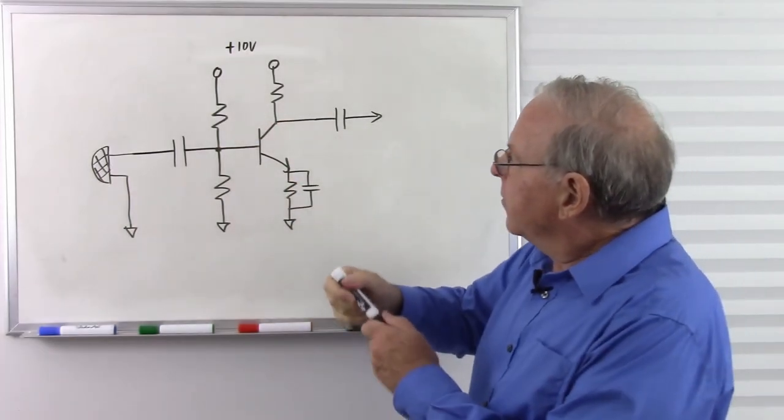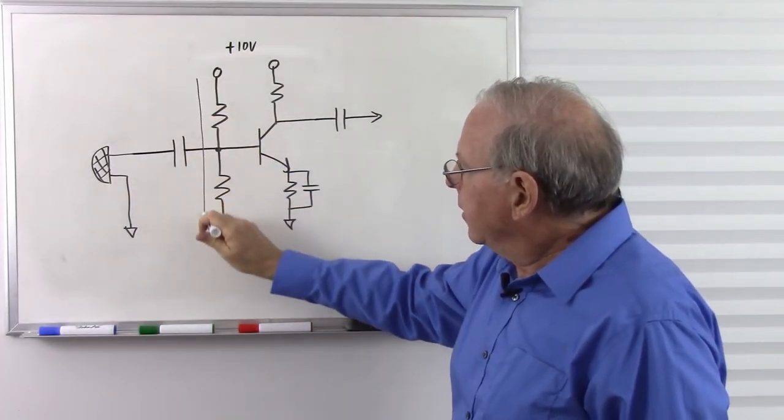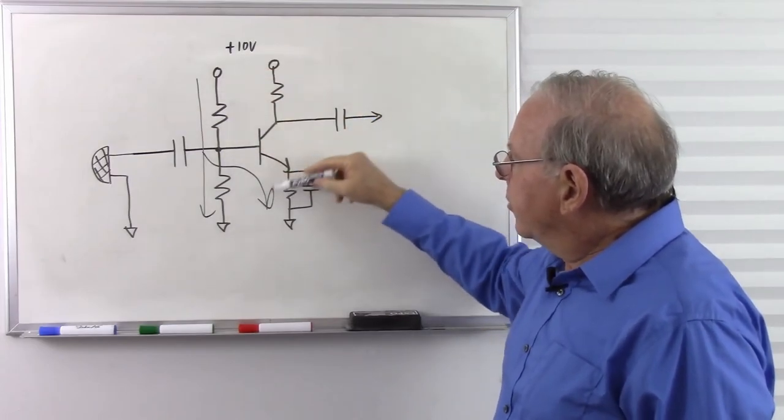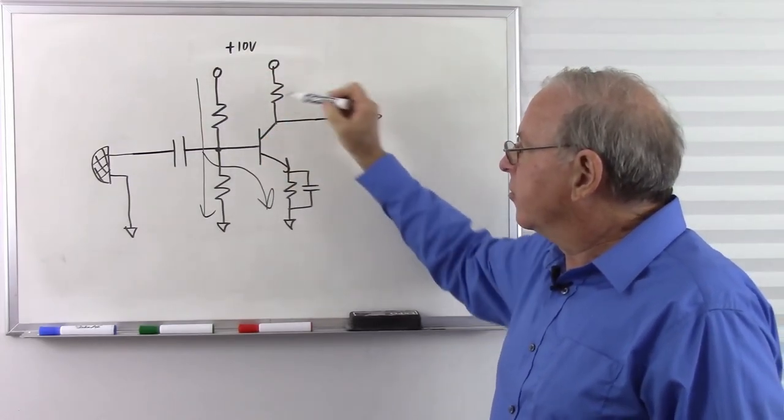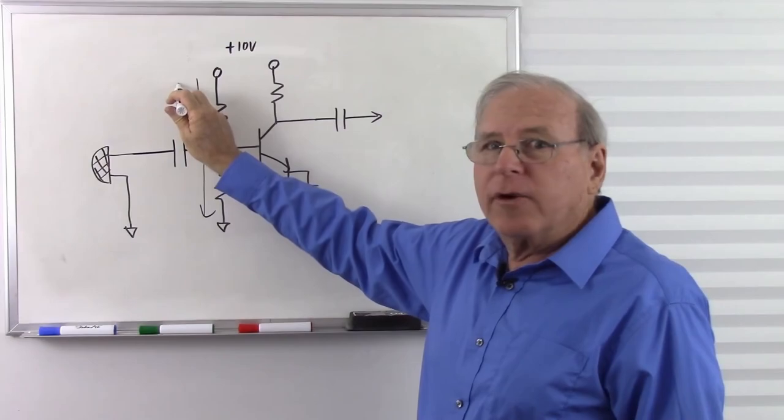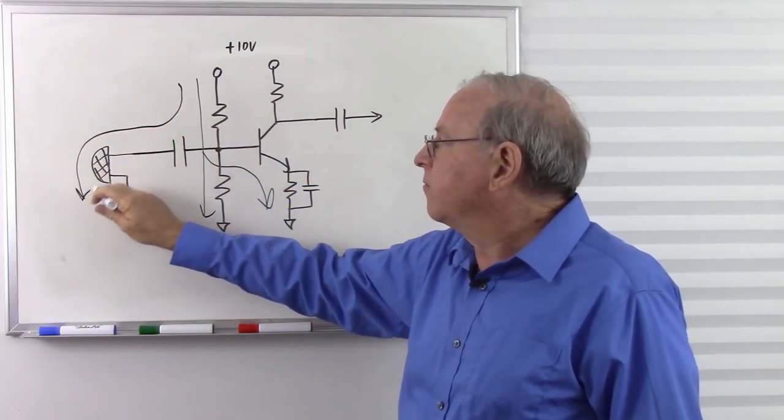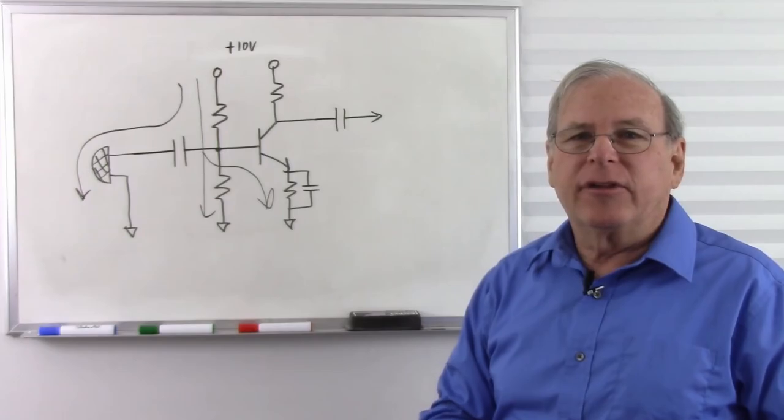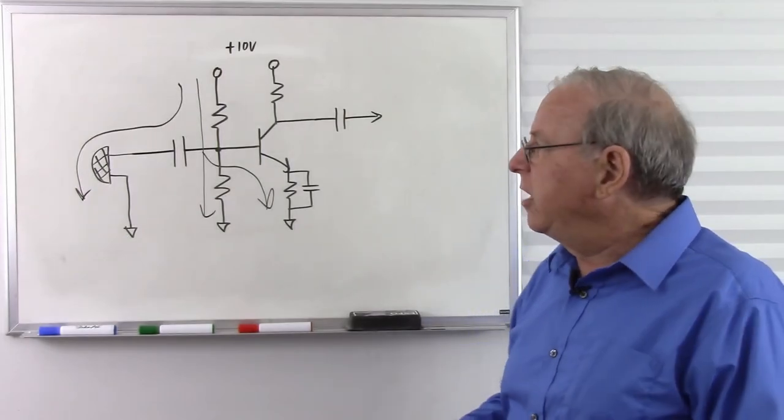Once again, we have direct current traveling here and here, biasing the system to give us just the right voltage to make this system work, but we don't want that direct current going through our microphone. We need to block it. So a capacitor, the mantra is, it passes AC but blocks DC.